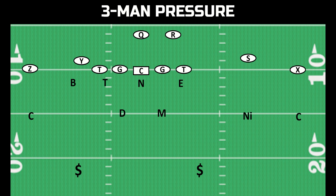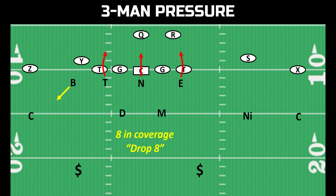Now we're talking about how many defenders are rushing the quarterback against a pass. The first type of play call is a three-man pressure. So even if a defense has four down linemen, one of them is going to drop in coverage and there is no additional linebacker or defensive back who blitzes — so you have eight defenders in coverage. This is often referenced as drop eight. It's not very common, but it is used in certain situations, like late game or third and a mile.